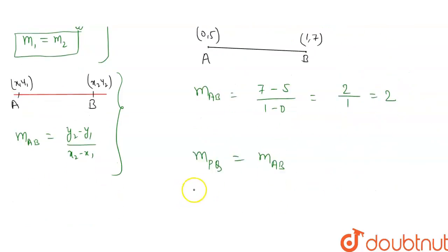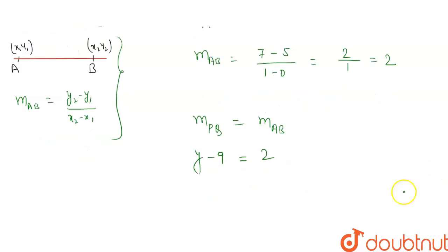Slope of PQ is y minus 9. It means y minus 9 will be equal to slope of AB, which is 2. It means y will be 2 plus 9, which is 11. So we got the value of y, which is 11. Thank you.